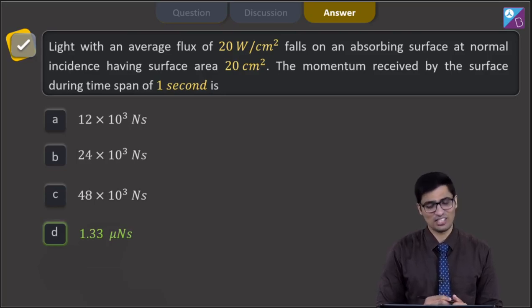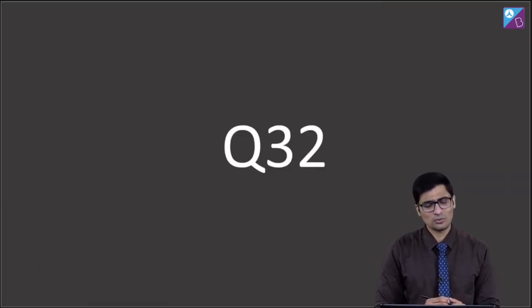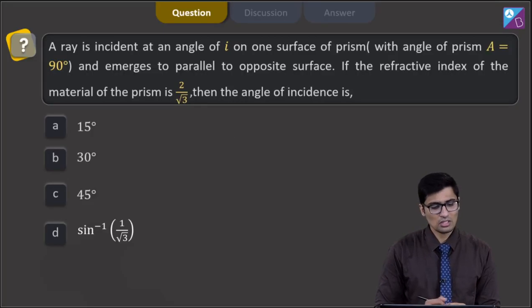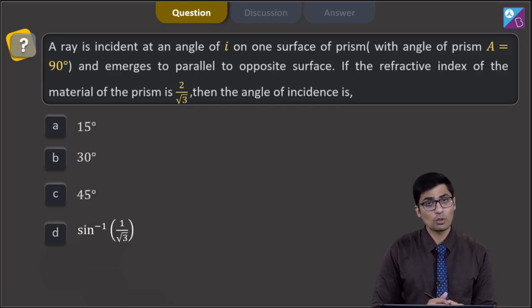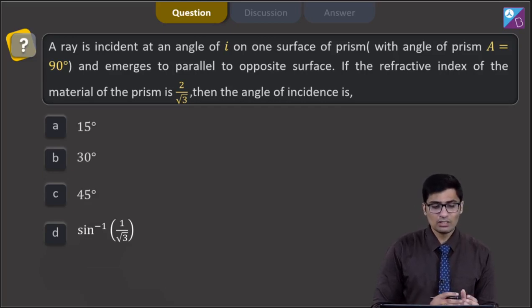Now, let us proceed to the next question. In this question which is question number 32, a ray is incident at an angle I on one surface of a prism with the angle of prism A equal to 90 degree and emerges parallel to the opposite surface. If the refractive index of the material of the prism is 2 by root 3 then the angle of incidence is.